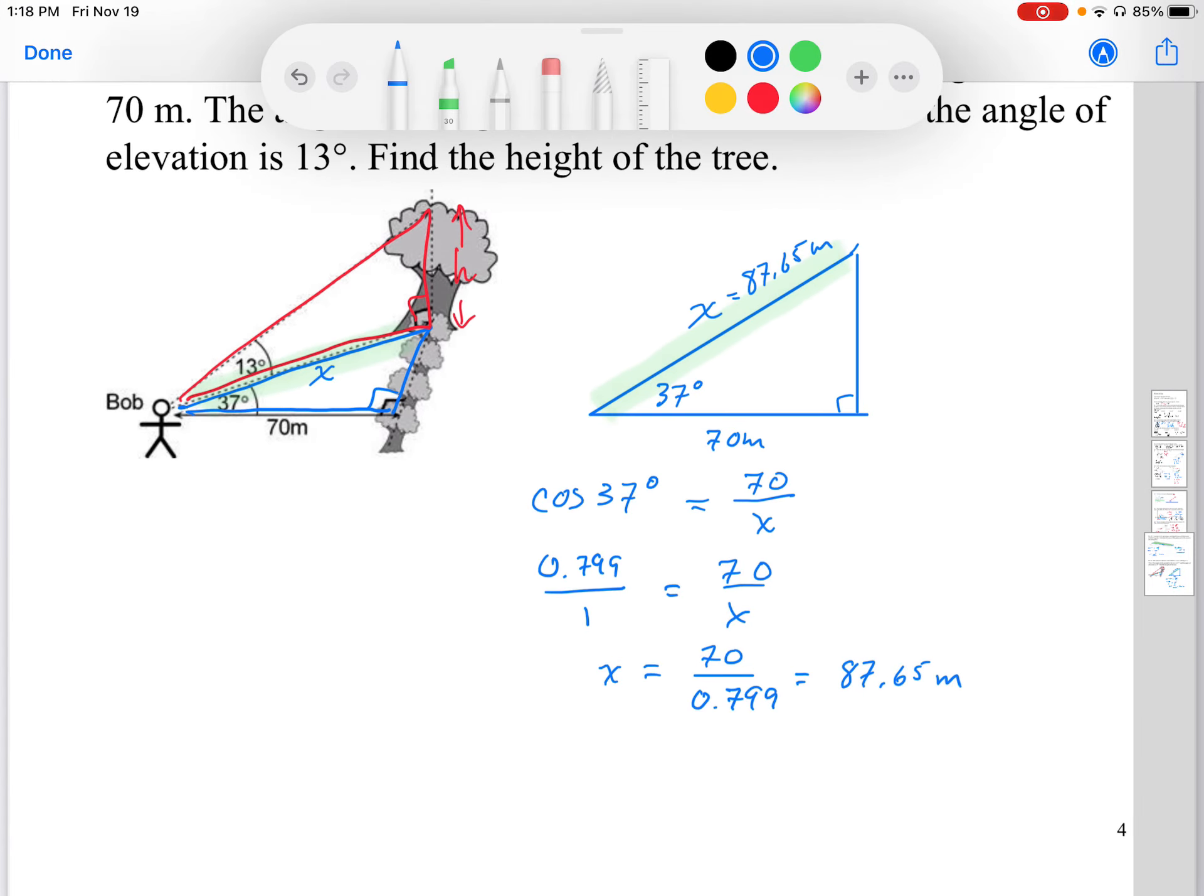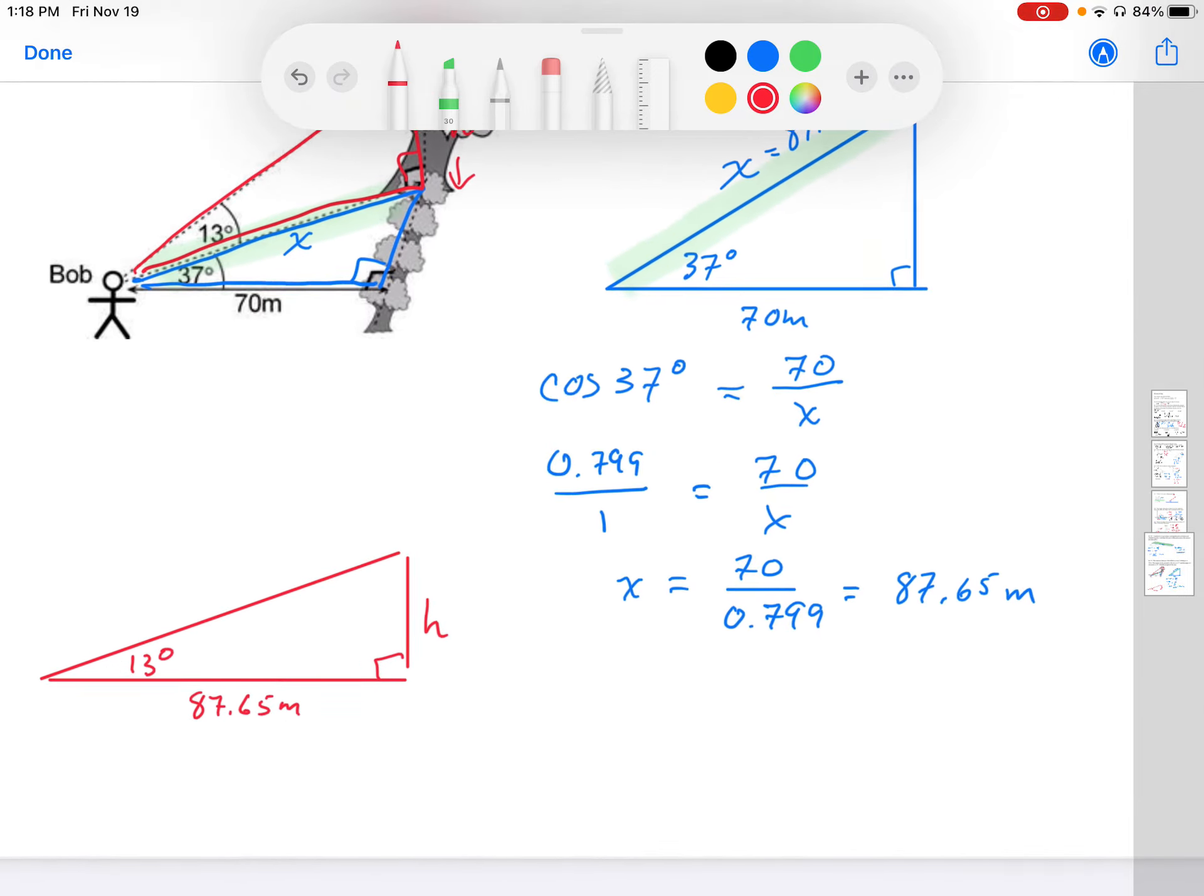That's going to be that length in there. So once I found out that length, I now can go to the vertical triangle and I'm going to solve that triangle. I have 13 degrees here, and it shares this length along the bottom. That length is 87.65 meters.